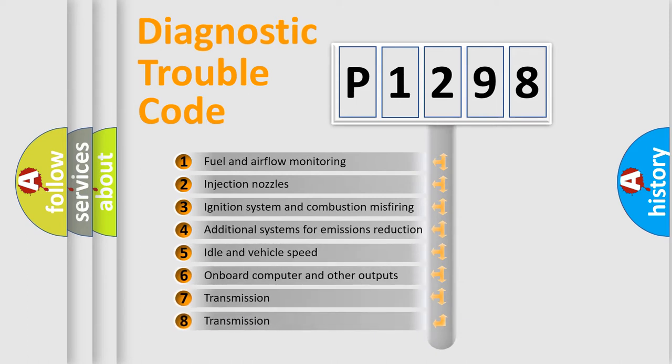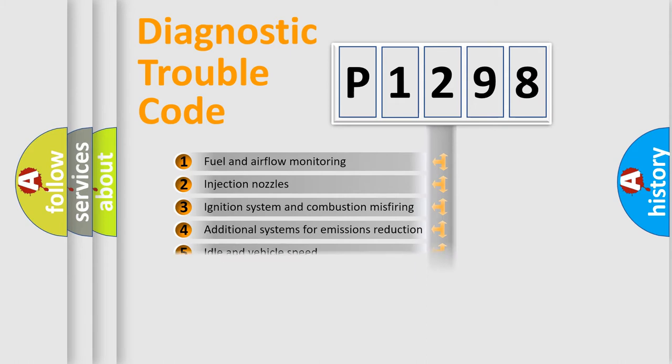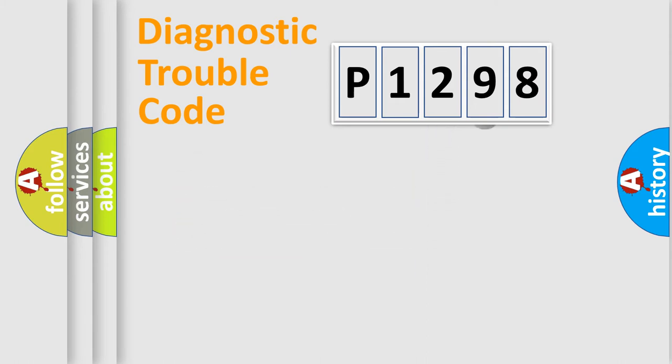The third character specifies a subset of errors. The distribution shown is valid only for the standardized DTC code. Only the last two characters define the specific fault of the group.